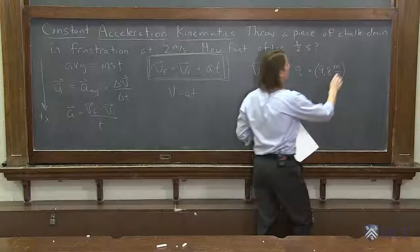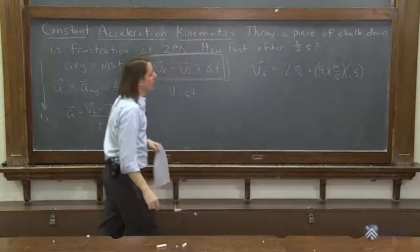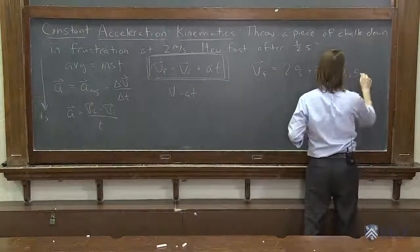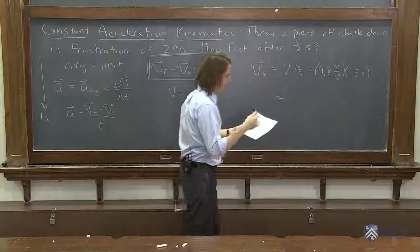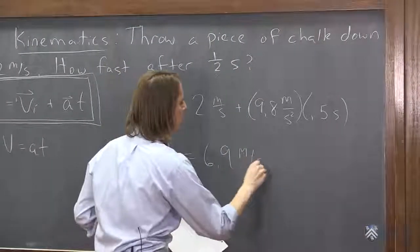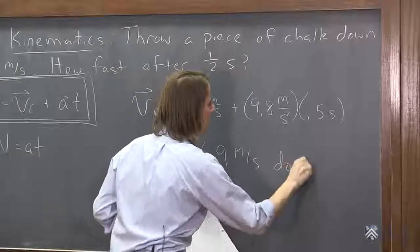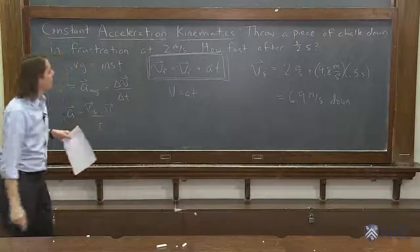And t is 0.5 seconds. So we solve that, and we get a half of 9.8, and we add 2 to it, and it's 6.9 meters per second down. And it's a vector because I put down, we'll say. So pretty straightforward to plug in.